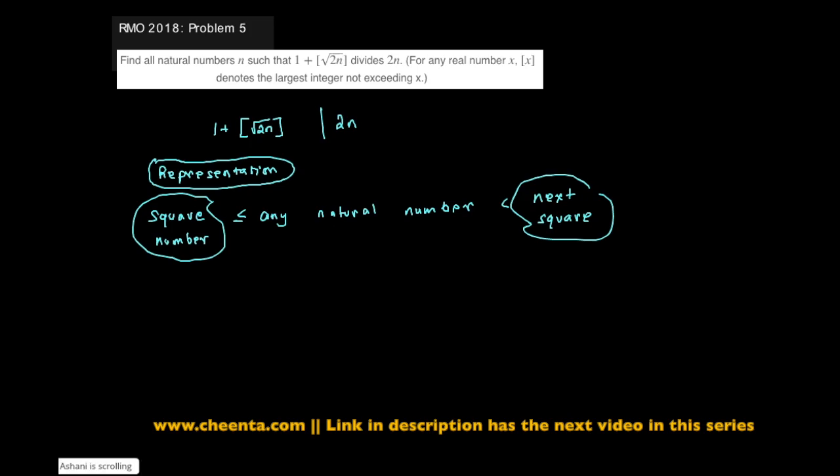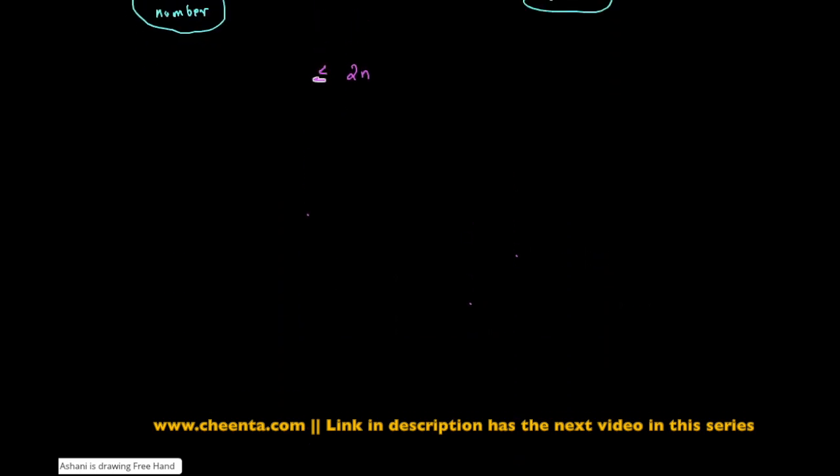Suppose we take square root of 2n, or rather let's work with 2n. 2n is a natural number, so it will be between, let's say a square number. So it will be between a square and a plus 1 square. A square quantity and the next square quantity.